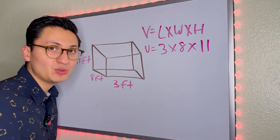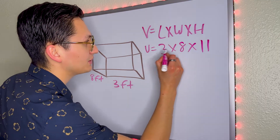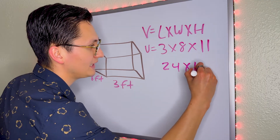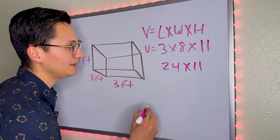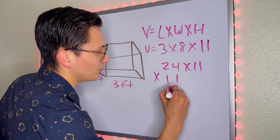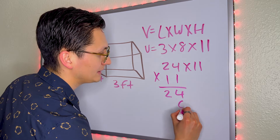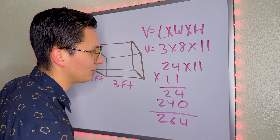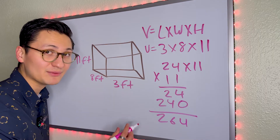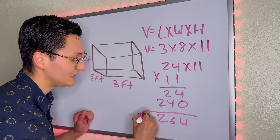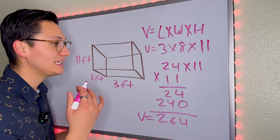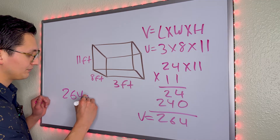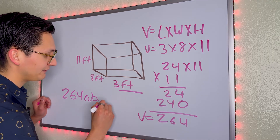All we have to do is multiply. 3 times 8 is 24, we bring down the 11 to multiply. 24 times 11 will be 264 cubic feet. Why cubic? Because this is the volume. So the answer is 264 cubic feet.